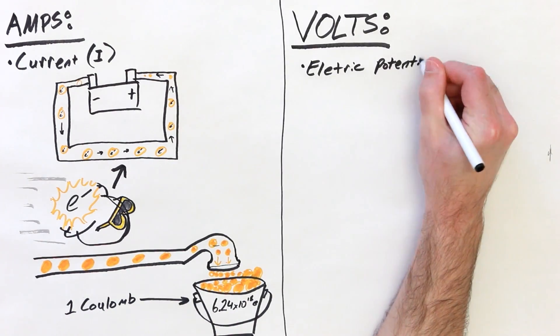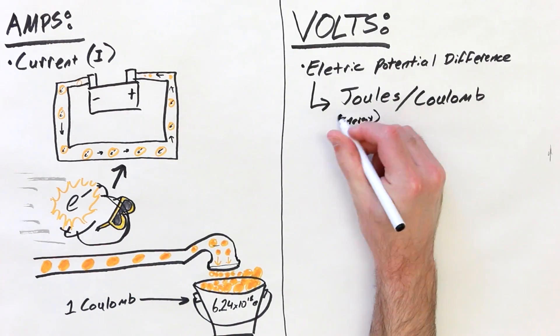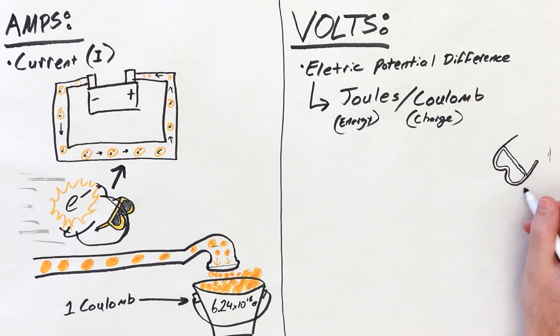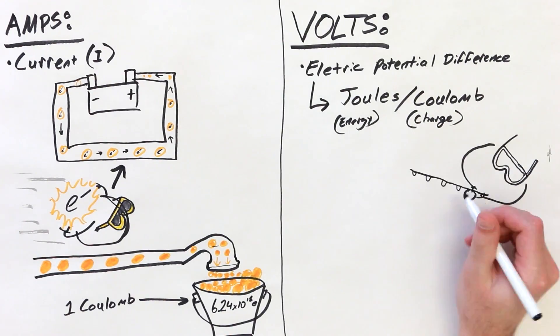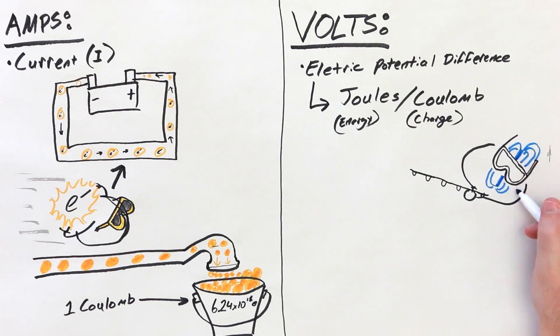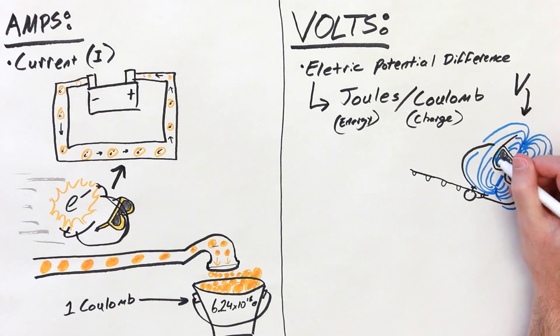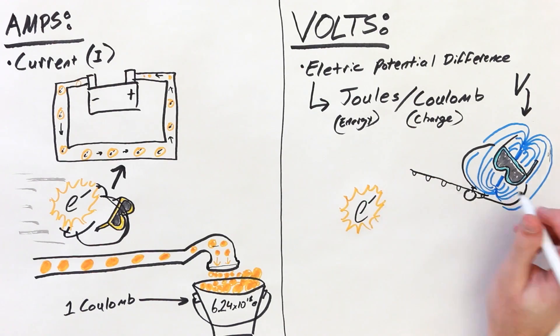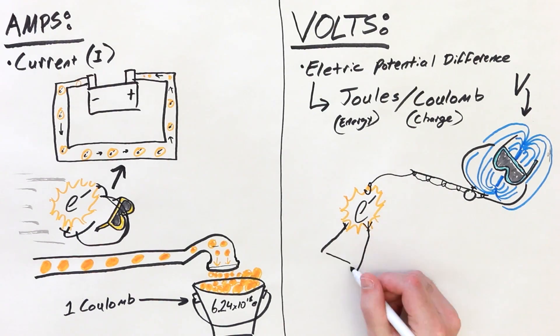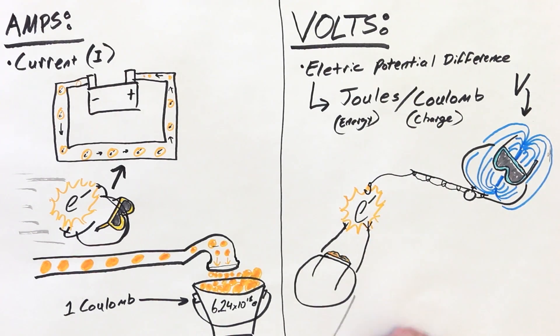The volt, on the other hand, is a unit of electric potential difference, characterized in joules per Coulomb. Electric potential difference causes an electric field in a circuit, which establishes a proportional current in said circuit. So a volt is the measure of the work performed to induce electric current per unit charge. Basically, voltage is what makes the electrons move. That said, the definition of these two units is actually pretty complicated, and isn't nearly as important for the purposes of this video as what you can do with these units.